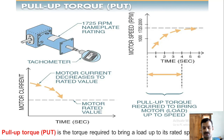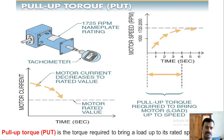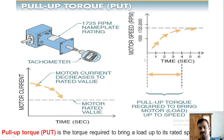Pull up torque is the torque required to bring a load up to its rated speed. For example, a motor rated at 1725 RPM connected to a load via a pulley or belt needs sufficient torque to accelerate from zero to rated speed — that is called pull up torque. On the graph, the starting inrush current is high, then slowly reduces as the motor accelerates, and the speed increases until it reaches rated speed.